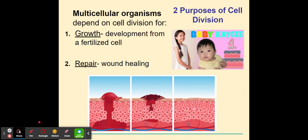There are two purposes to cell division. The first is growth and development from a fertilized egg, and the second is repair or wound healing as seen in the image. When your father's sperm fertilizes your mother's egg, at that moment you are a single cell. But because of mitosis, division of your body cells, you become multicellular and your cells specialize to perform different functions.